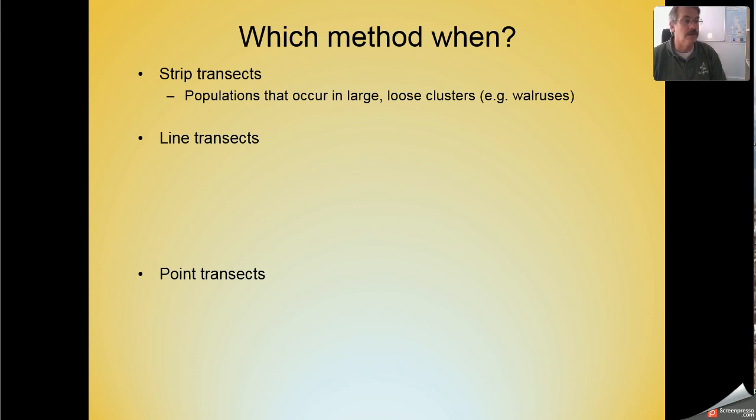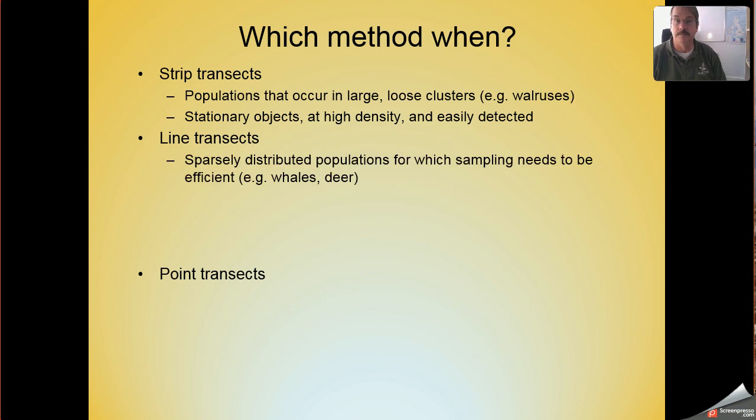Back to the biology for a moment. I've got a slide here on when to use specific methods that we've now talked about. We've talked about strip transects where detectability is assumed to be perfect out to some distance w, line transects where we don't assume perfect detectability, and point transects where the observer remains stationary as opposed to moving. Strip transects are useful when you have animals that are in big groups, and those groups might be loosely organized. Strip transects are also good for studying things that don't move, like plants, or things that occur at high density, or things that are easy to see, easy to detect.